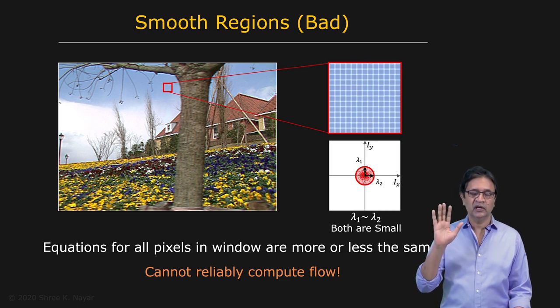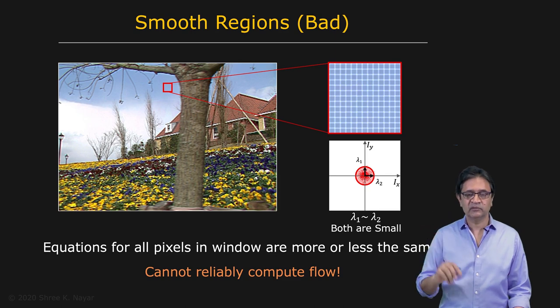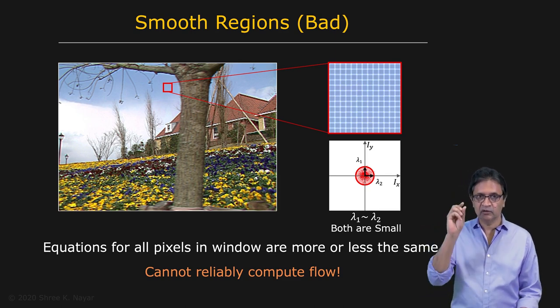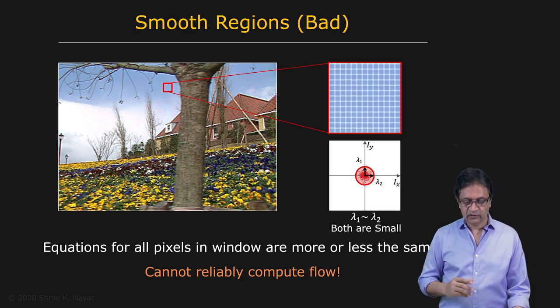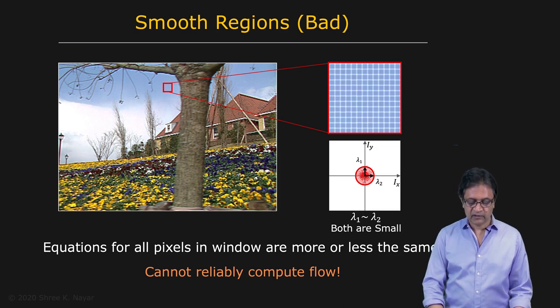And that applies to us as well. If I show you a scene or a surface patch which has no texture and I move it, well it looks pretty much the same even after the motion, any local patch within it. So it cannot be estimated reliably. So that's what I would call a bad region.